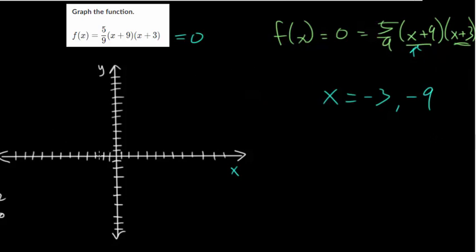So I'm going to plot those. So this point right here is negative three, and then negative nine, so that's negative nine.